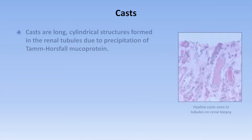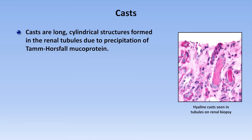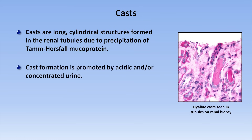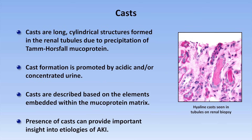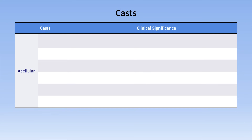The last significant finding on UA is the presence of casts. Casts are long cylindrical structures formed in the renal tubules due mostly to precipitation of Tamm-Horsfall protein, which is the most abundant protein normally excreted in urine, though its normal function is not well understood. Cast formation is promoted by acidic and/or concentrated urine. Casts are described based on the elements embedded within the mucoprotein matrix as they form, and can provide important insight into the etiologies of acute kidney injury.